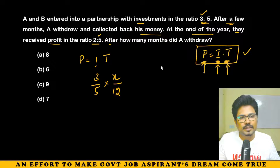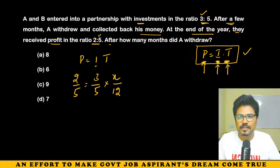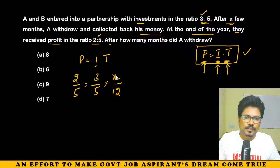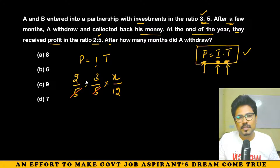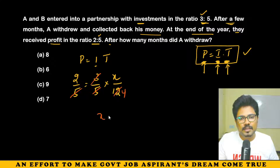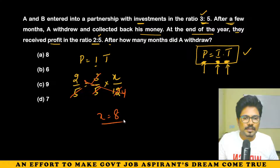From the profit ratio equation: 3X : 60 = 2 : 5. Cross-multiplying gives 15X = 120, so X = 8. A withdrew after 8 months. That is the answer.